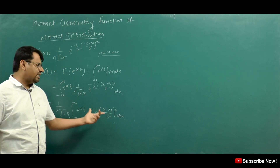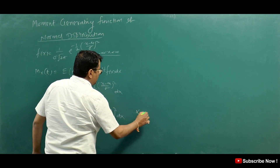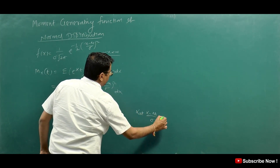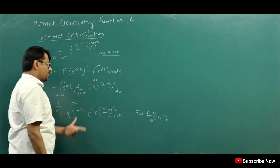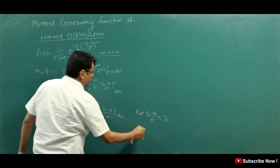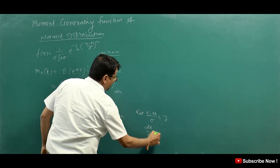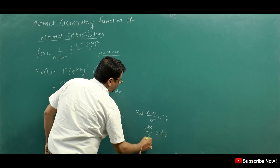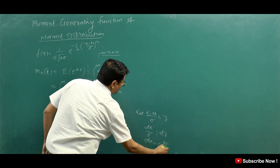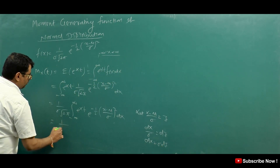Now we will do a substitution. Let z equal to x minus mu upon sigma. So dx upon sigma equals dz, which means dx equals sigma dz. The limits remain minus infinity to infinity since z goes from minus infinity to infinity just as x does.